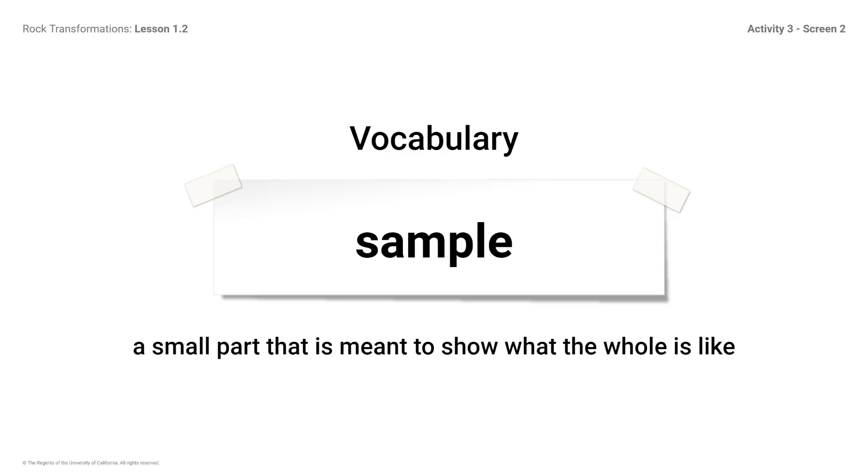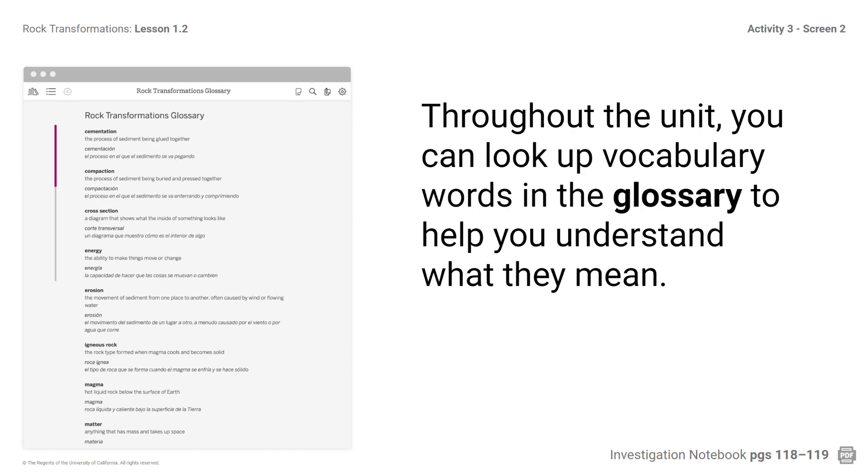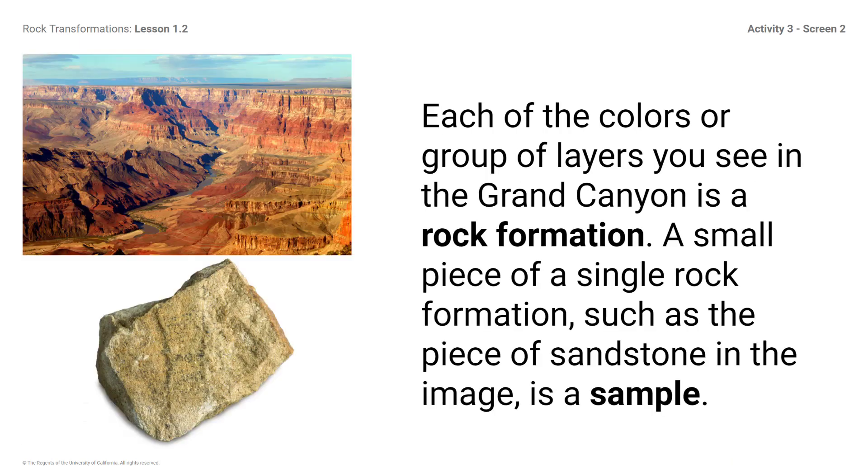Vocabulary: Rock formation - A region of rock that formed together as a single type of rock. Remember to look at the glossary if you need more support. Throughout the unit, you can look up vocabulary words in the glossary to help you understand what they mean. Each of the colors or group or layers you see in the Grand Canyon is a rock formation. A small piece of a single rock formation, such as the piece of sandstone in the image, is a sample.